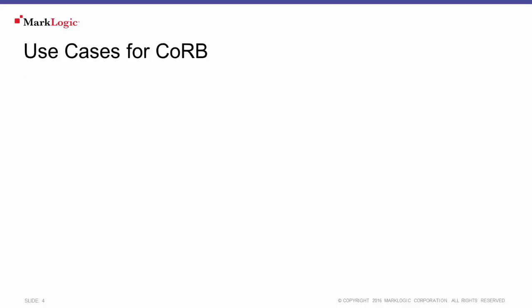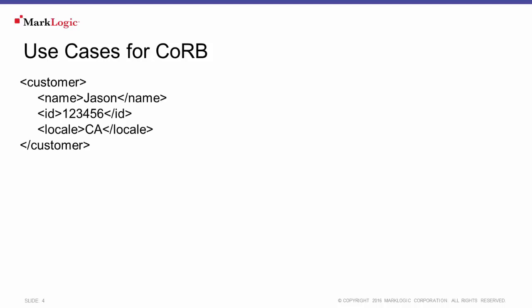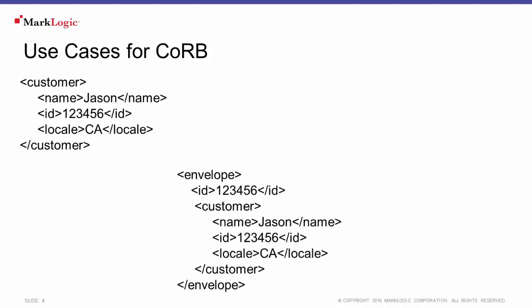There are two main use cases for CORB. One is to modify existing content. Let's say you have customer information already loaded into MarkLogic and the decision is made to implement an envelope solution. So how can you take all of your existing content and shift it to the envelope motif? CORB can help you with this — it will allow you to select all of the customer data and modify them to wrap them in an envelope.